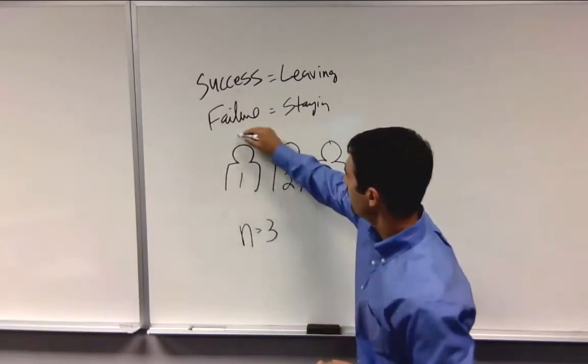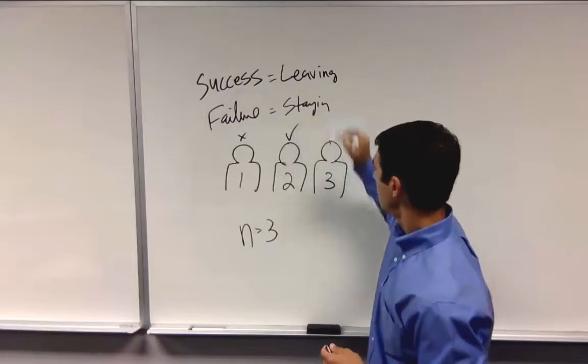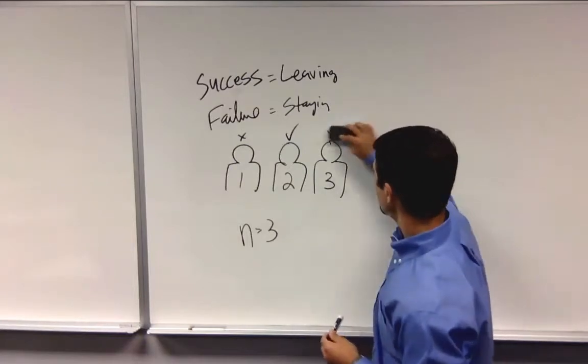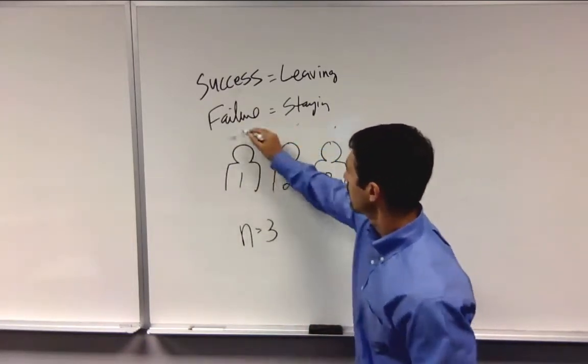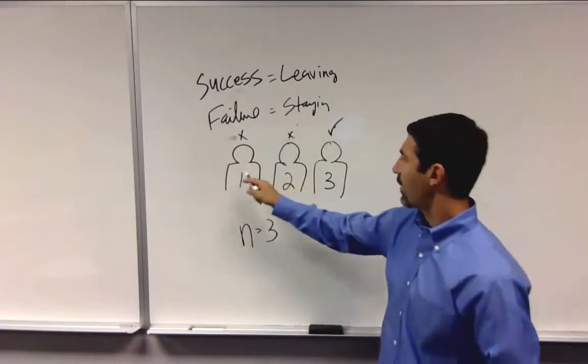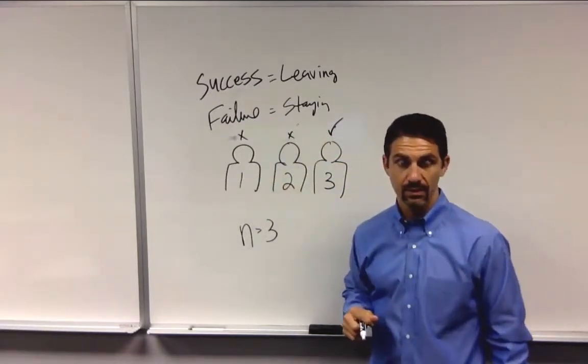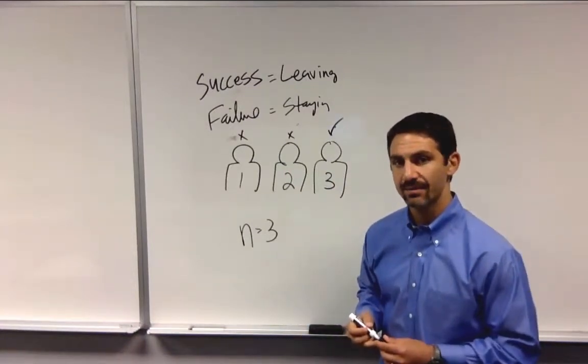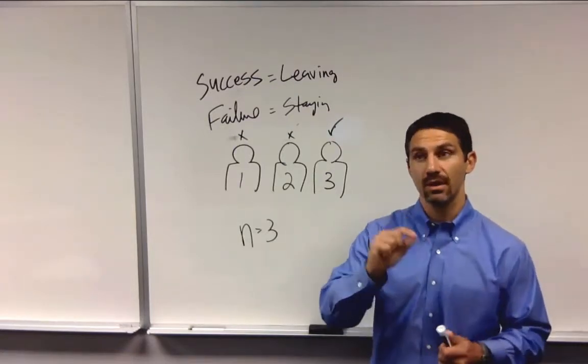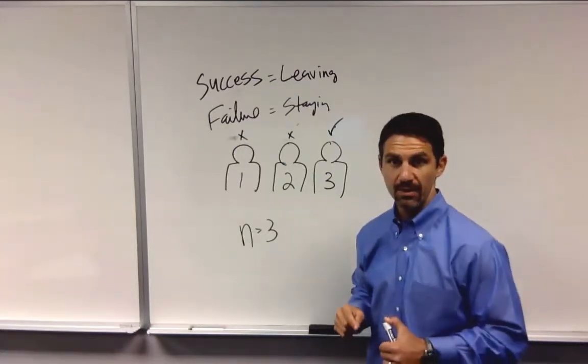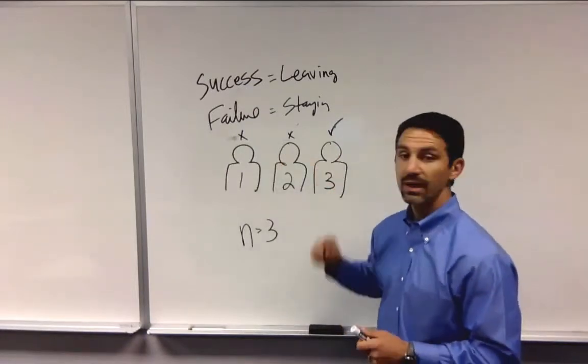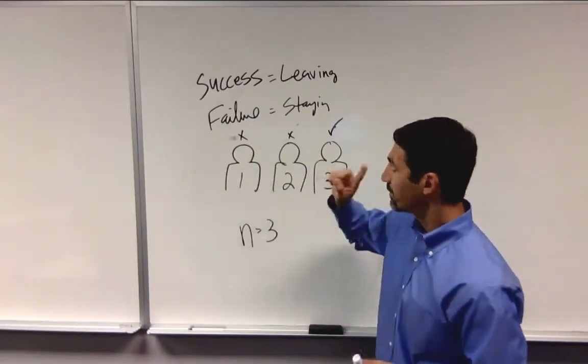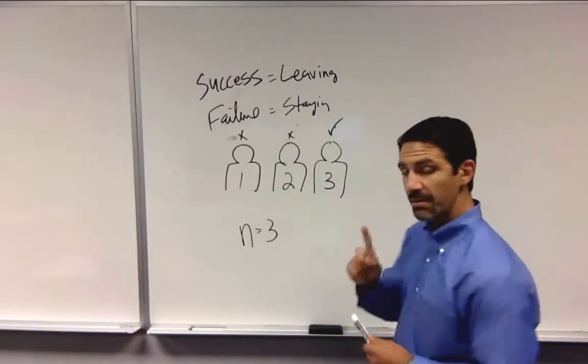Also, it could be where that person stays, that person leaves, and that person stays. And then lastly, it could be that one and two stay, and the third one leaves. How many possible outcomes is that? How many possible different paths to get to one person leaving is there? It is three different ones. So there are three possible combinations of one person leaving, two people staying.